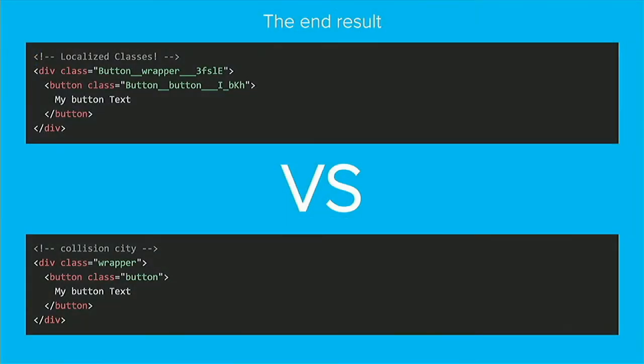We have the localized class, so now nothing is going to touch or mess up my style — versus the collision city you'd get using normal classes. Really basic but really important for what we needed to do.